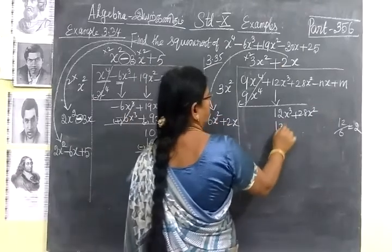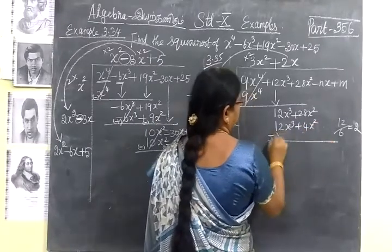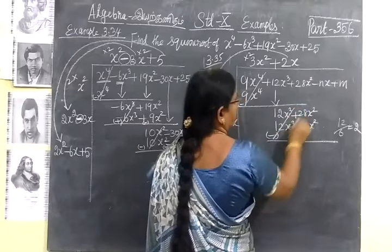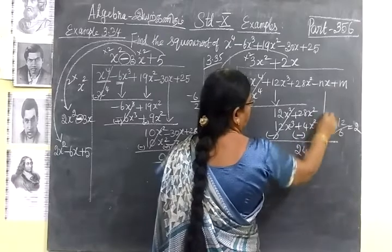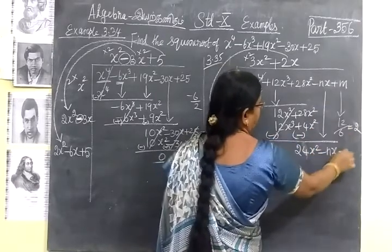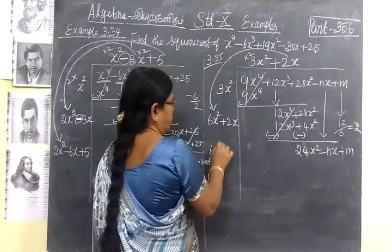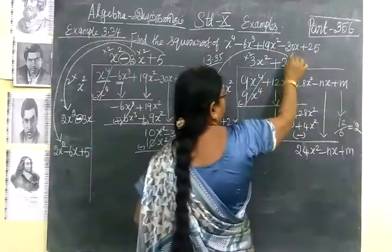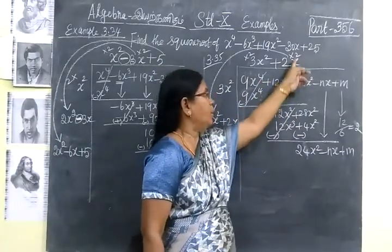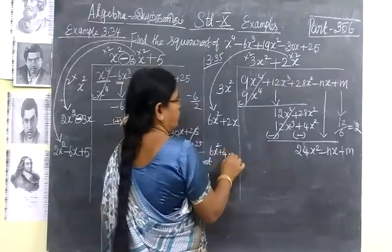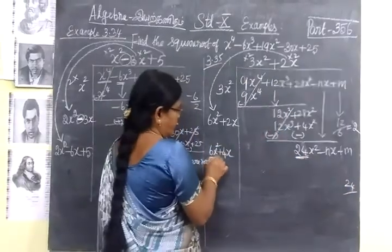So 2 into 6 is 12x cube. Then 2 into 2 is 4, so 4x square. Now change the sign: minus, here also minus. So 28 minus 4 is 24x square. Now bring down the remaining terms. Here you write the next term. Now you write x square. The second term you multiply by 2. Every time you are multiplying the positive term by 2, and next time multiplying the second term by 2. So you write 4x square. The first number is 24 and here the first number is 6, so it divides.